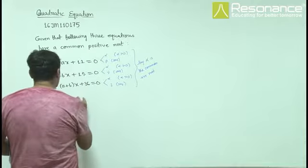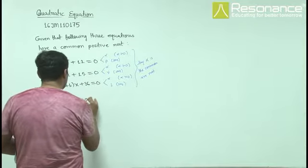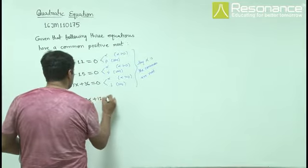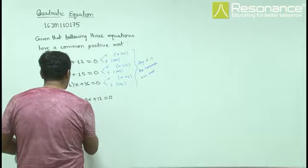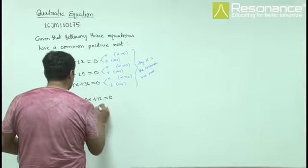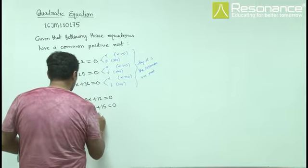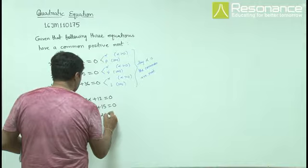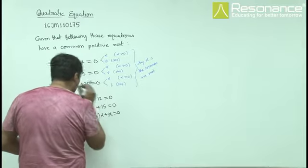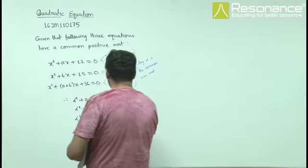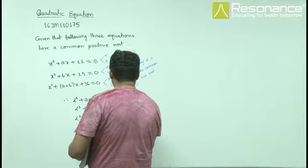Since alpha is the common root: α² + aα + 12 = 0, α² + bα + 15 = 0, and α² + (a+b)α + 36 = 0. These are equations 1, 2, and 3.